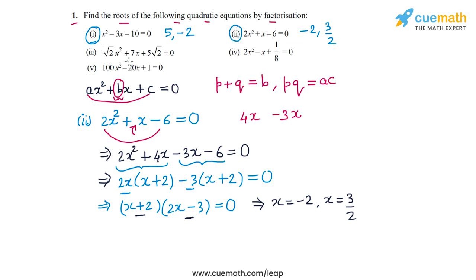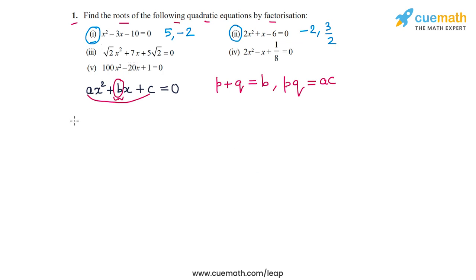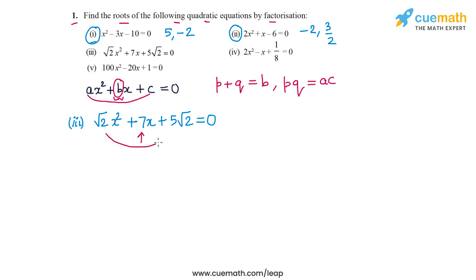Now let's go to part 3. The equation is √2x² + 7x + 5√2 = 0. To split the middle term 7x, we need two numbers whose sum is 7 and whose product is √2 × 5√2 = 10. Those two numbers are clearly 2 and 5.